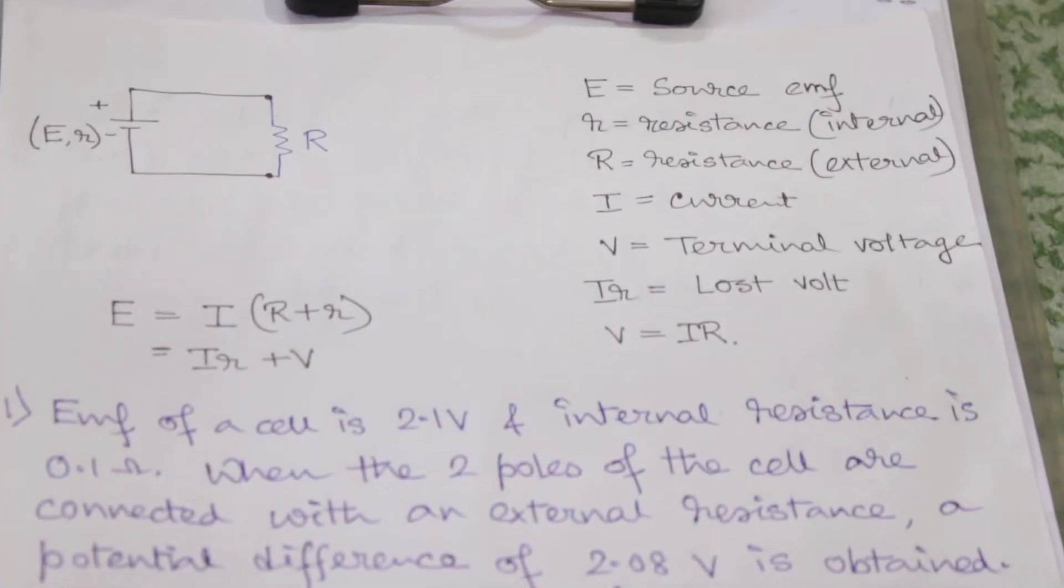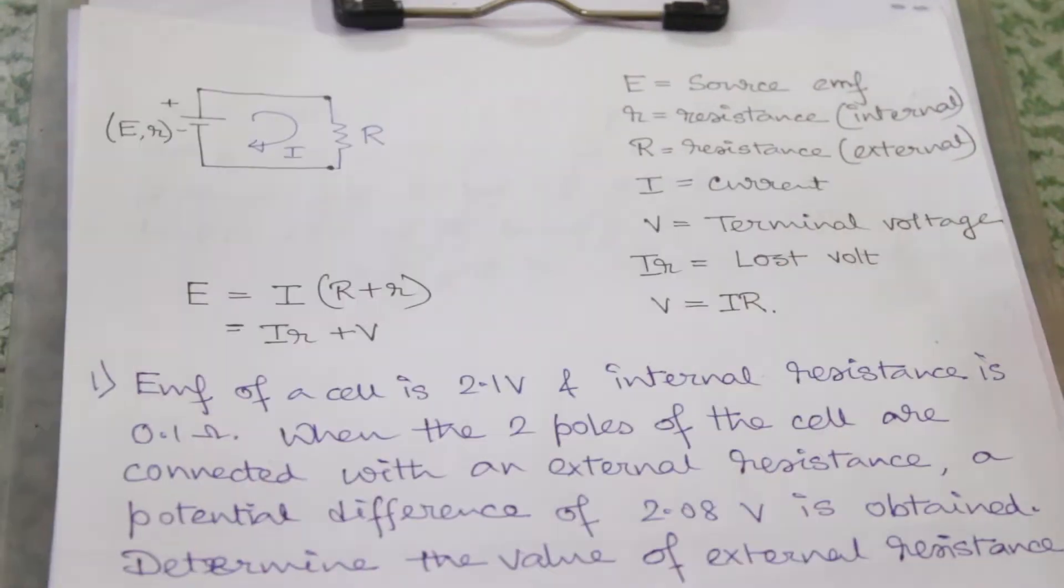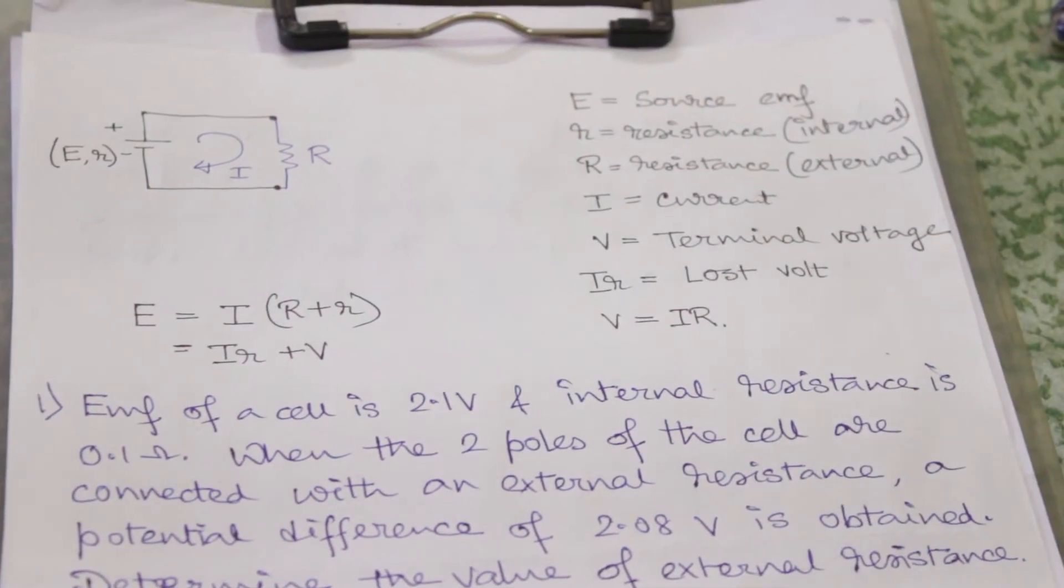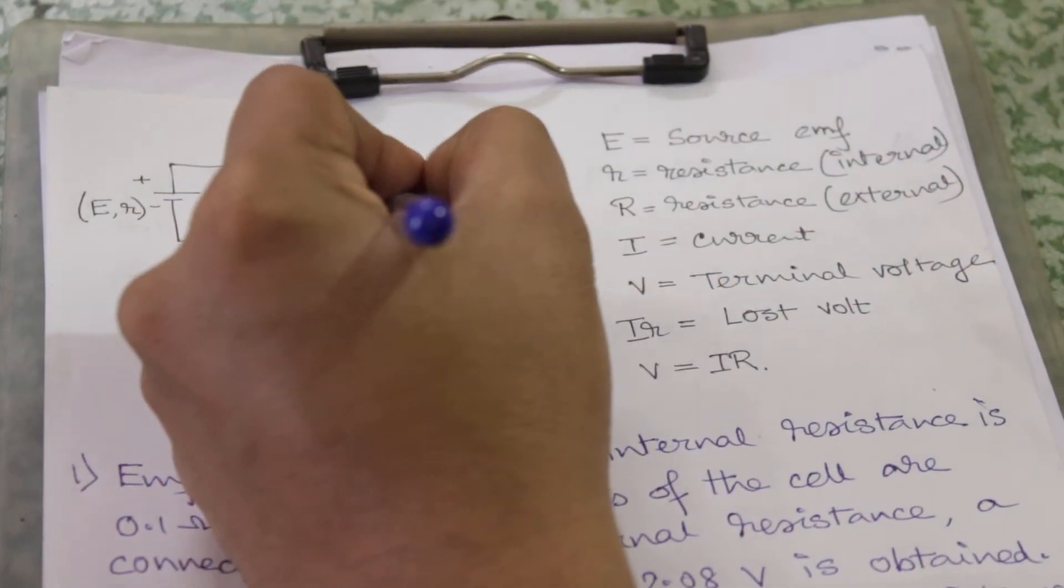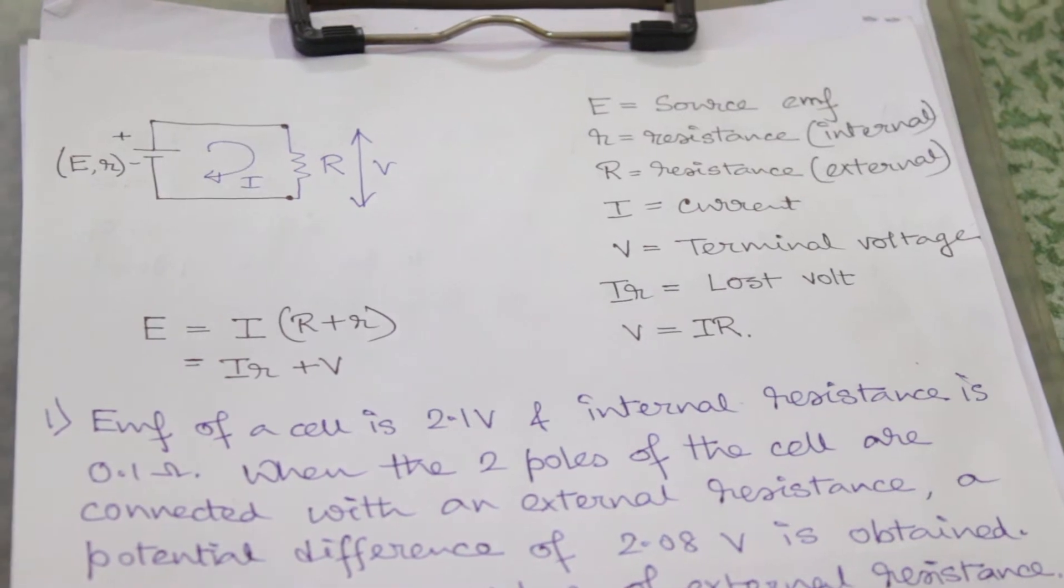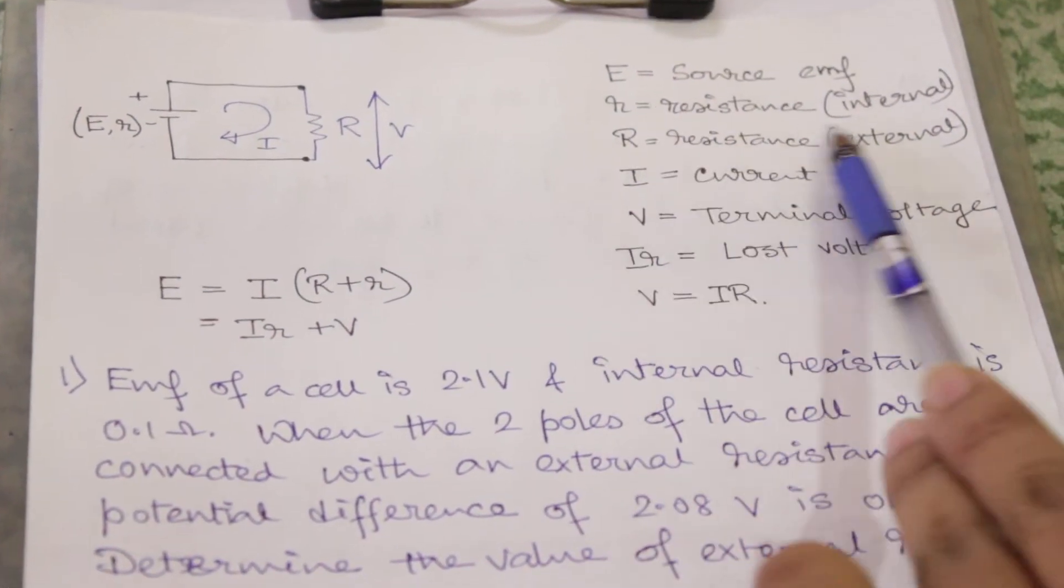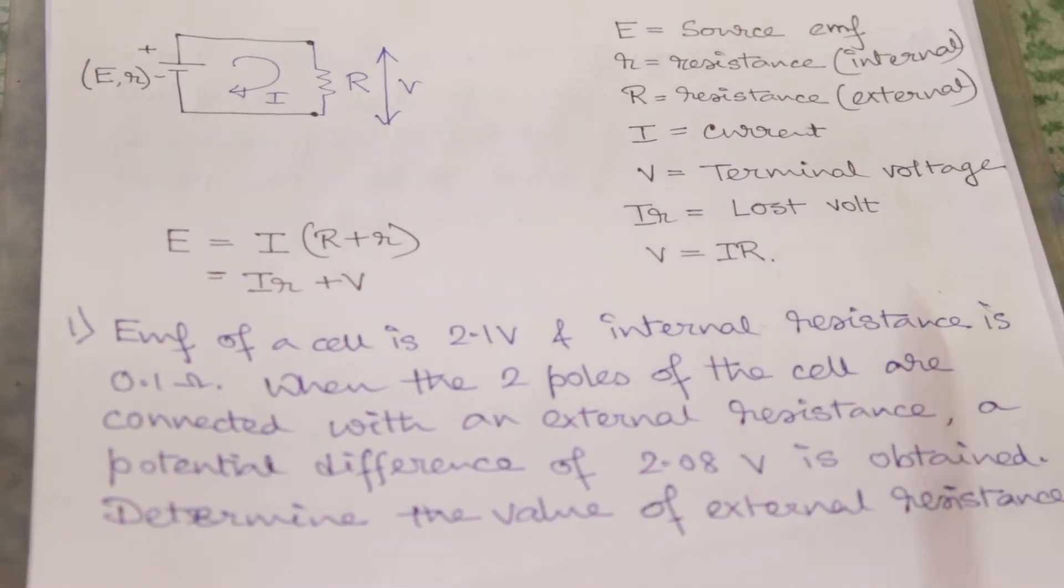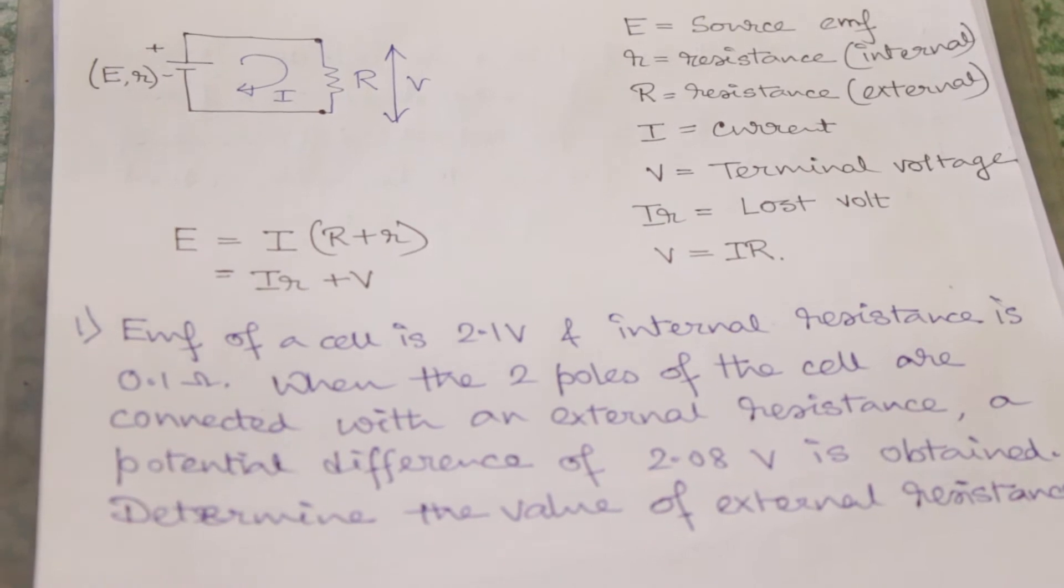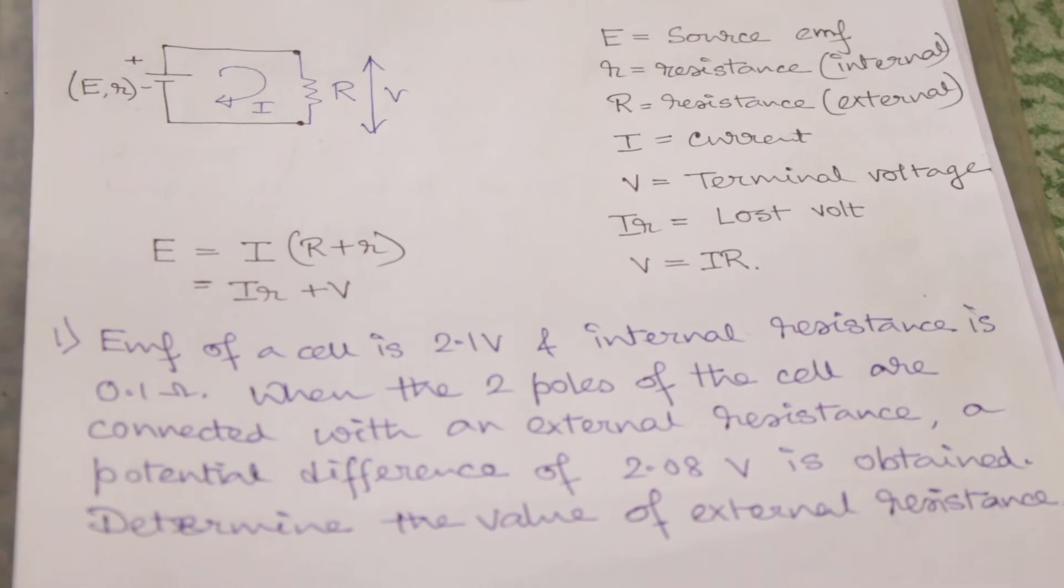EMF is E and the current flowing through is I, and terminal potential means voltage drop across this external resistance is capital V. So E is the source EMF, r is internal resistance, capital R is external resistance, I is the current, V is the terminal voltage. I into smaller r is the lost volt, means voltage drop across the internal resistance.